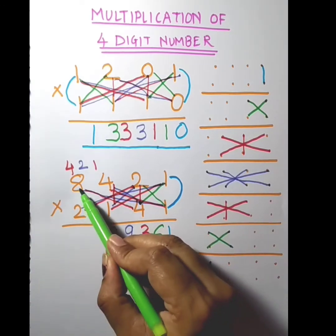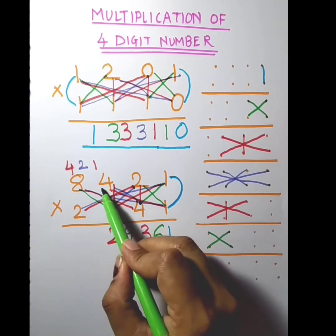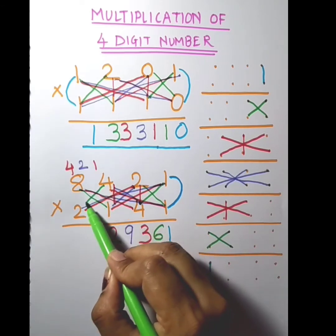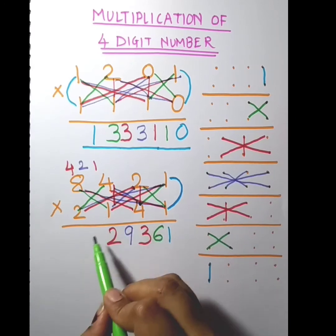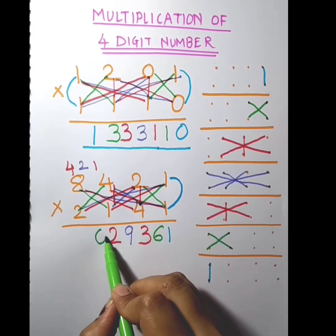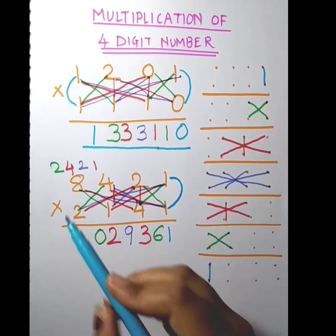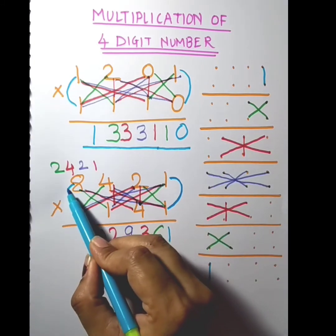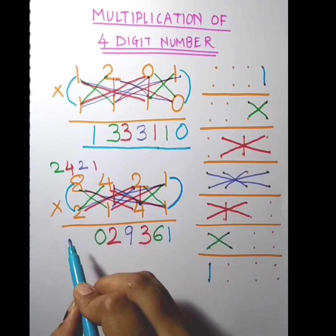Now 8 into 4 is 8 — wait, 8 into 4 is 8, so 8 plus 8 is 16, plus 4 is 20. Write 0 and carry 2. Now the last two digits: 8 into 2 is 16, plus carry 2 is 18.